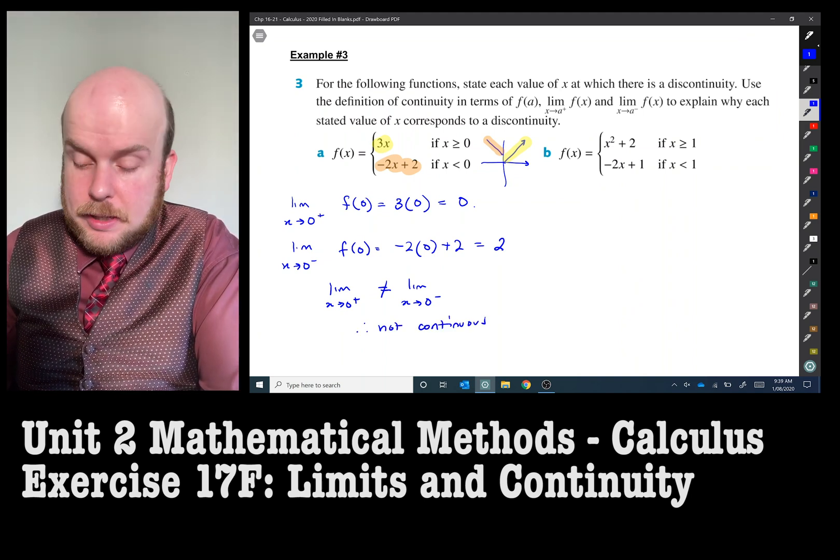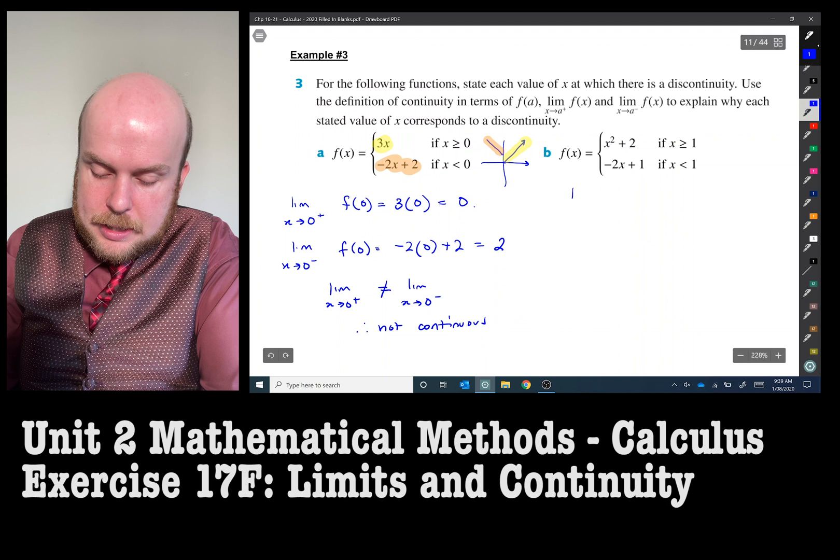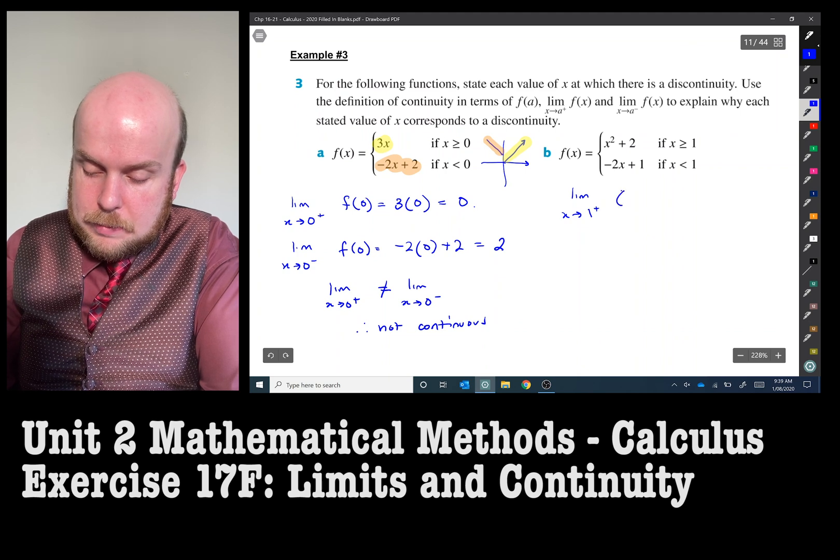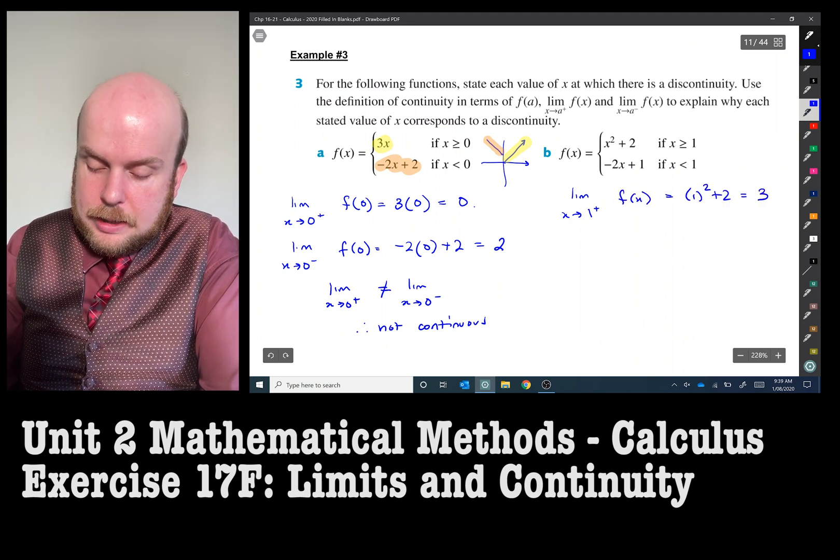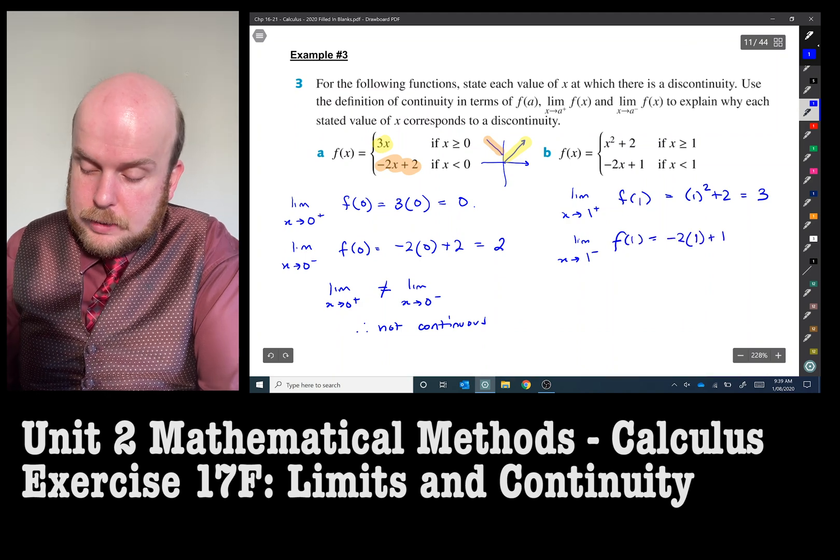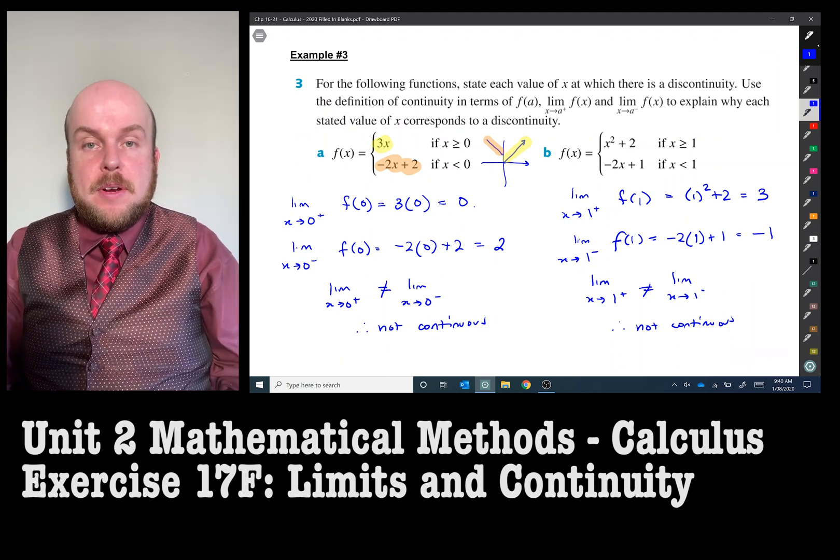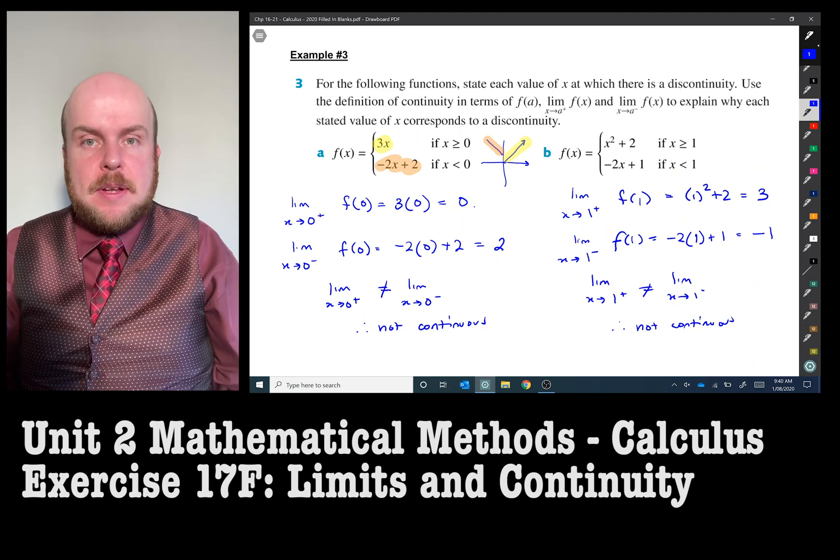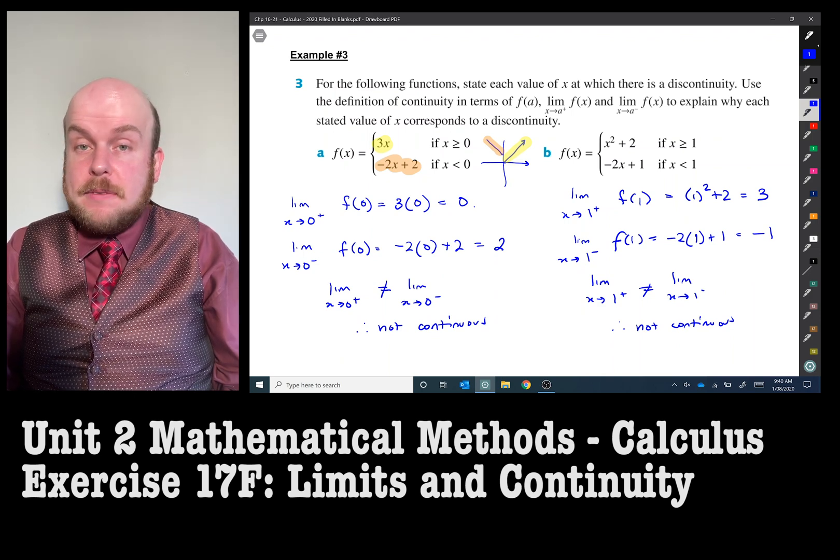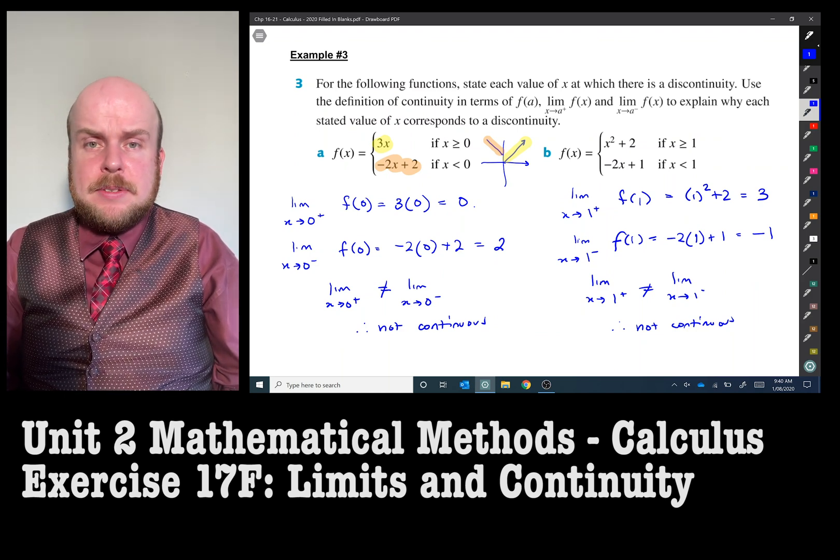For b it'll be a very similar concept. We've got a quadratic when x is greater than one but we've got a linear function when x is less than one. So let's do the limit as x approaches one from the positive. So that's going to be one squared plus one. And then the limit as x approaches one from the negative. So because the values of when I substitute x into either one of those hybrid functions, because I get a different y value or f(x) value, then there's a discontinuity. And so now I can state mathematically the limit as x approaches from the left, or in this case approaches from the right, does not equal to the limit as x approaches one from the left. It is not continuous.